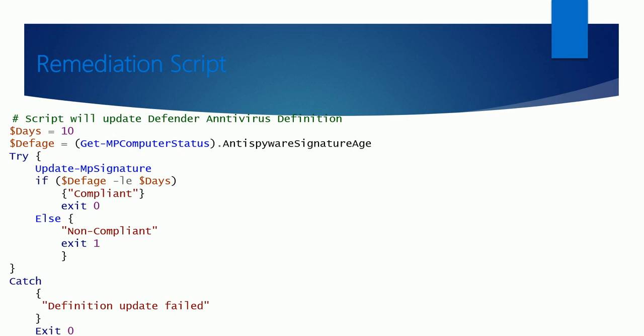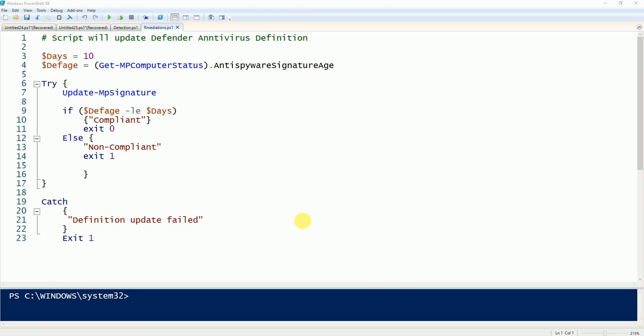For the remediation script, you can use the update signature command to fix an outdated device. If your virus definition is greater than 10 days old, the script will run; otherwise it will give you the exit code and skip. Let's now move forward and look at the actual scripts.